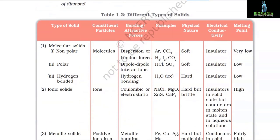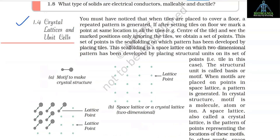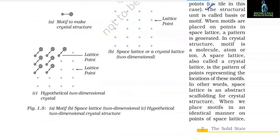1.4 Crystal Lattice and Unit Cells. When tiles are placed to cover a floor, a repeated pattern is generated. If we mark a point at the same location in all tiles, we obtain a set of points — this is a space lattice on which the pattern has been developed. The structural unit placed on lattice points is called the basis or motif. In crystal structure, the motif is a molecule, atom, or ion. A space lattice (also called crystal lattice) represents the locations of these motifs.